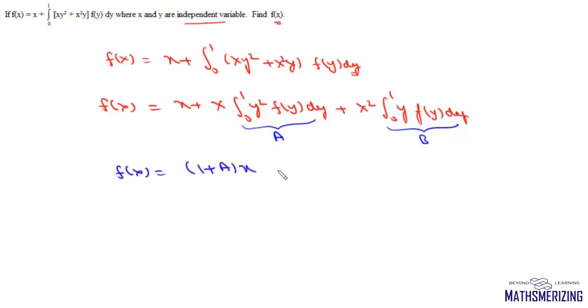So we can write the function f(x) as 1 plus ax plus bx². Now we need to find the values of a and b.